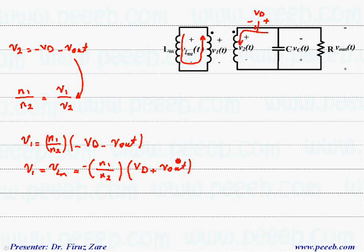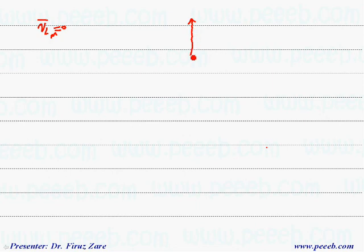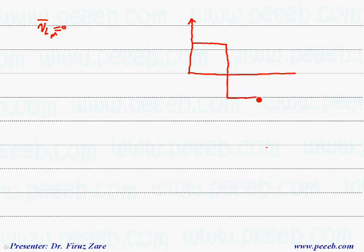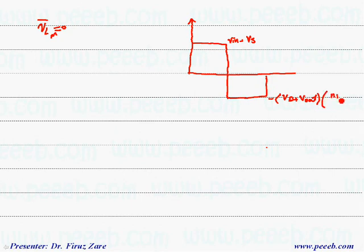Now we can find the average voltage over one cycle in order to find the steady-state equation, because in steady state the average voltage across the magnetizing inductor should be zero. Then we can find the conversion ratio. When the switch is on, the voltage across the magnetizing inductor is Vin minus Vs. When the switch is off, the voltage across the magnetizing inductor is minus Vd plus Vout, times of turns ratio N1 over N2.